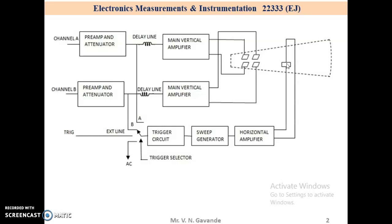It consists of six deflection plates, four vertical and two horizontal deflection plates. Now see the different blocks. It consists of channel A input signal and it is having its own pre-amplifier attenuator.